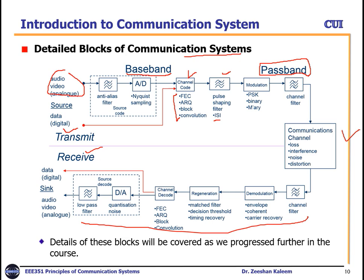Modulation moves the signal to a higher frequency for transmission; there can be digital or analog modulation schemes, which will be covered later in this course. The channel filter cuts unnecessary bands to transmit the signal within the specified passband. The communication channel introduces loss, interference, and noise. After passing through the channel, reverse processes occur: channel filter, demodulation, regeneration, channel decoding, and if the signal was digital, digital-to-analog conversion and a low-pass filter.